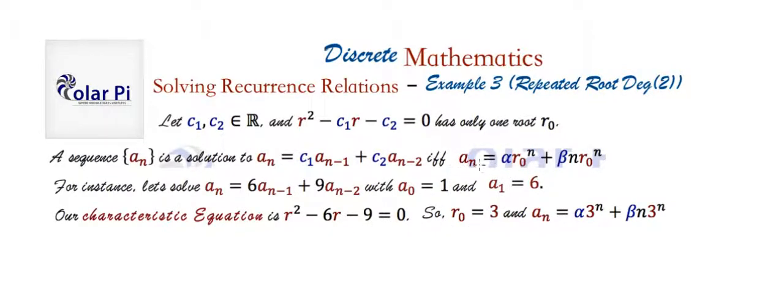And with the theorem above, that means, in turn, that the solution has to be like this. So 3 here and 3 here in place of r 0 there and r 0 there. Now, if we were not told that a 0 is 1 and a 1 is 6, so if we're seeking for just a general solution to this degree 2 recurrence relation, we'd be done here.